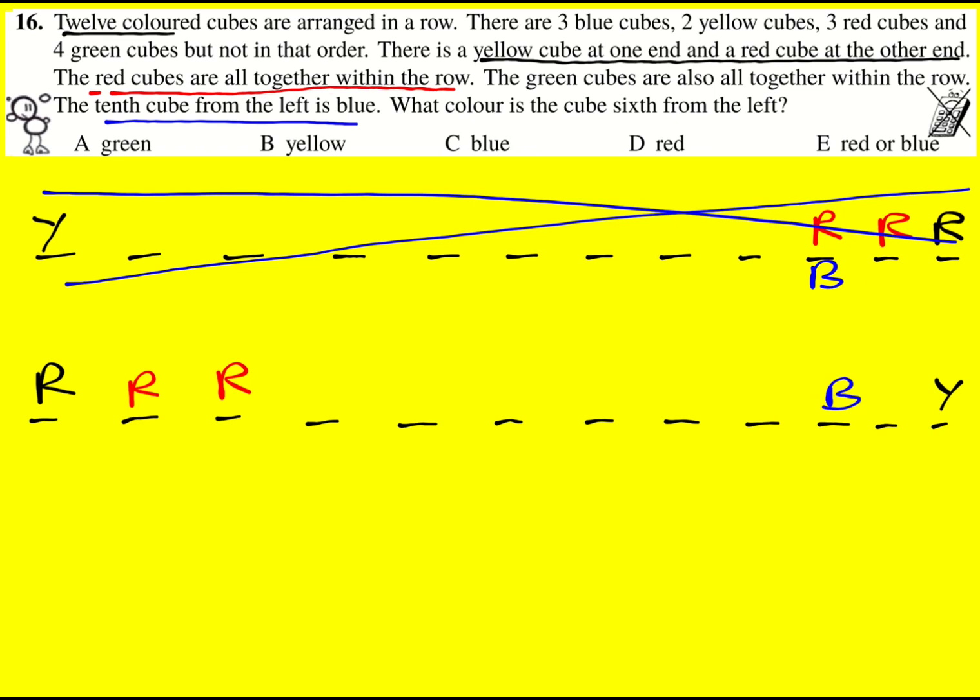Dealt with that. Alright, the only piece of information I've not used actually is the fact that the green cubes must also all be together in a row. Now, there are four of them.